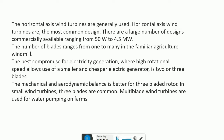Horizontal axis wind turbines are the most common design, available ranging from 50 watts to 4.5 megawatts. The number of blades ranges from one to many, as in familiar agricultural windmills. The best use is for electricity generation, where high rotational speed allows use of a smaller and cheaper electric generator. The mechanical and aerodynamic balance is better for a 3-bladed rotor. In small wind turbines, 3 blades are common. Multi-bladed wind turbines are used for water pumping on farms.